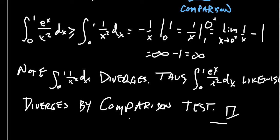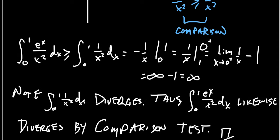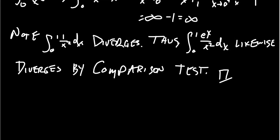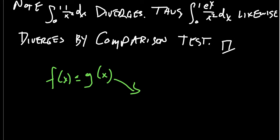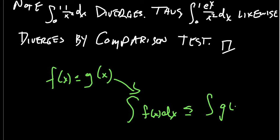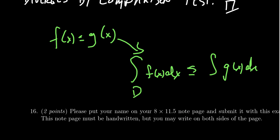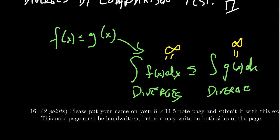The major theorem we were using is the comparison test — we actually have to have a comparison, meaning an inequality of some kind. You then show that the other integral diverges or converges and make the comparison. If f of x is less than or equal to g of x, then the integral of f of x dx is less than or equal to the integral of g of x dx. If the lower function diverges, that means it equals infinity. If something is greater than or equal to infinity, it is likewise infinity, and therefore we can infer that the larger integral also diverges.